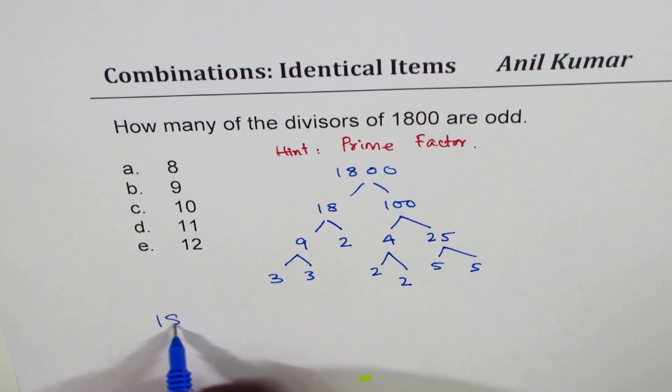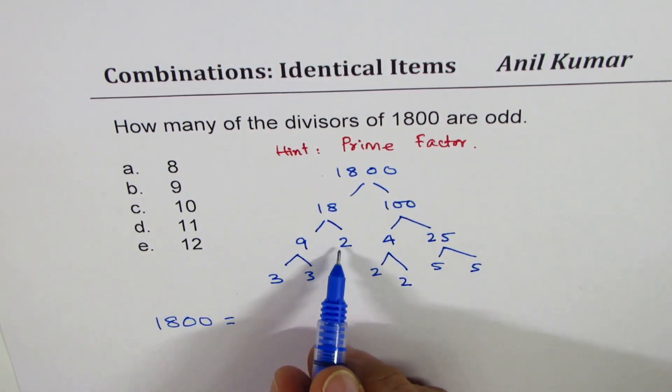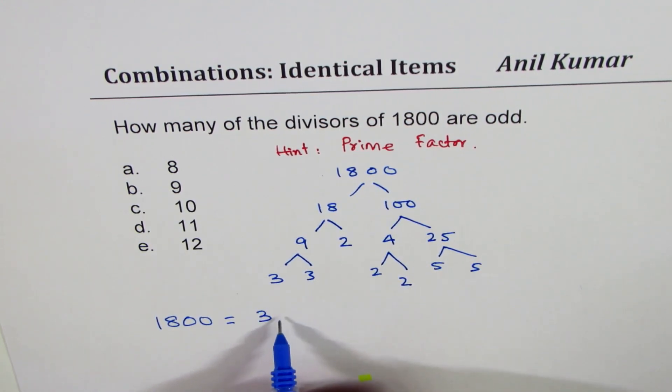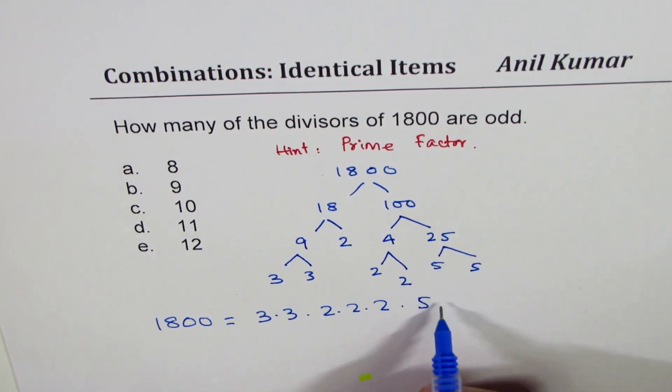So we can write that 1800 is equal to - let me write 3 first - 3 times 3 and then three 2's: 2 times 2 times 2, and two 5's.